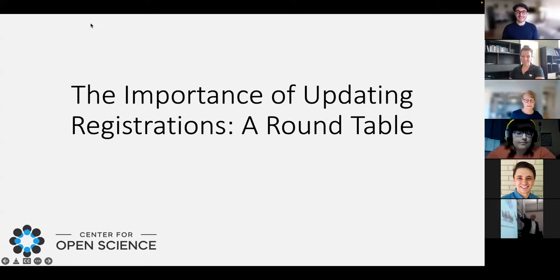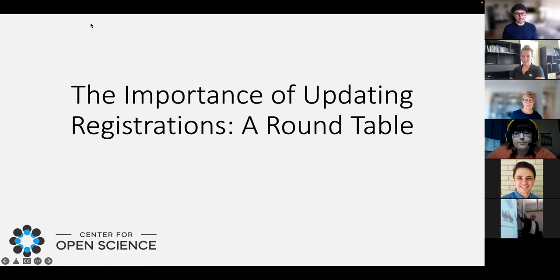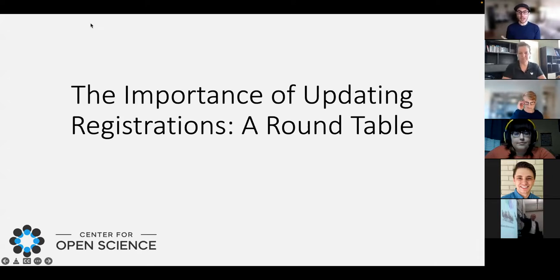Open Science aims to make scientific processes more transparent and results more accessible. Pre-registration is one of the open science methods where researchers report a study design and/or their analysis plan before results are known, with the goal of increasing the transparency of the research and reducing unethical research behaviors. Updating a pre-registration is a way to transparently report unexpected changes — a great example being COVID.